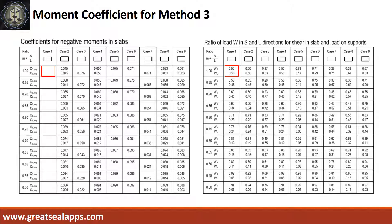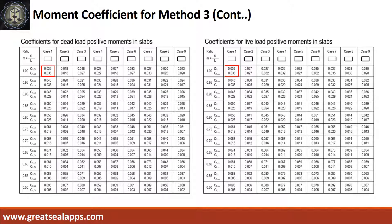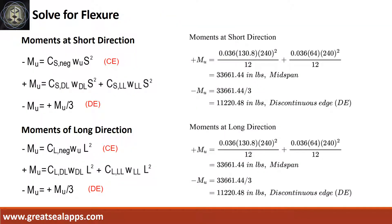Use case 1 at m equals 1 for coefficient for negative moments and shear computations, and for dead load and live load positive moments. Moments at short direction: positive moment at mid-span is 33,661.44 inch-pounds, negative moment at discontinuous edge is 11,220.48 inch-pounds. Moments at long direction: positive moment at mid-span is 33,661.44 inch-pounds, negative moment at discontinuous edge is 11,220.48 inch-pounds.